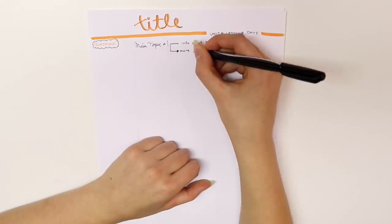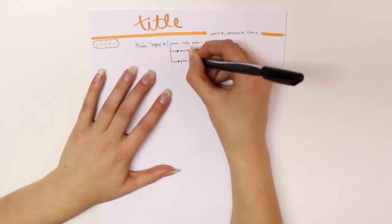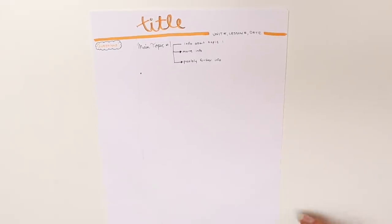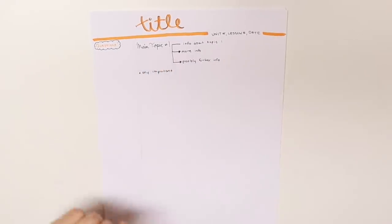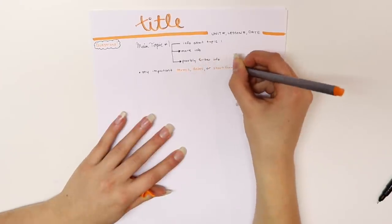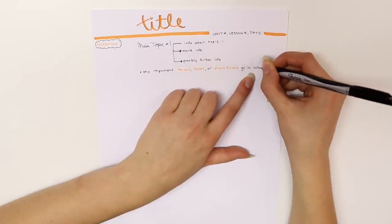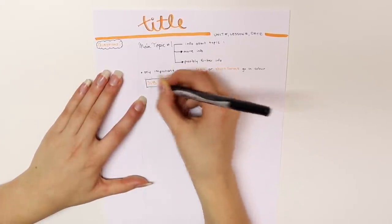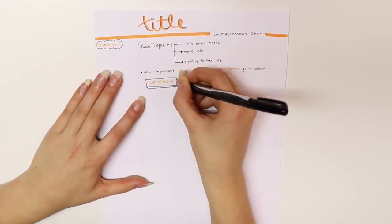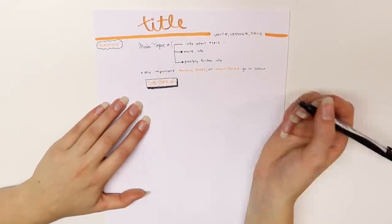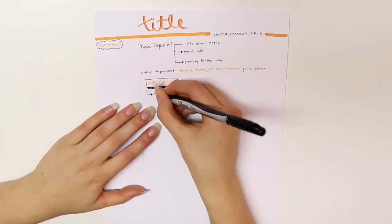The first thing that I do is write my main topic in cursive, and then from that I will do a dash out and some arrows for any information that is going off of that. Any important words or dates always go in my colored pen just to differentiate and make it stand out more. Next, if there's a subtopic to that main topic, what I will do is write that in different colored pen as well, box that up, and make it stand out from the rest of the information.